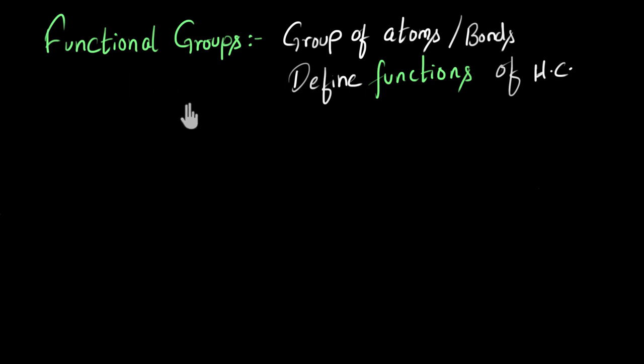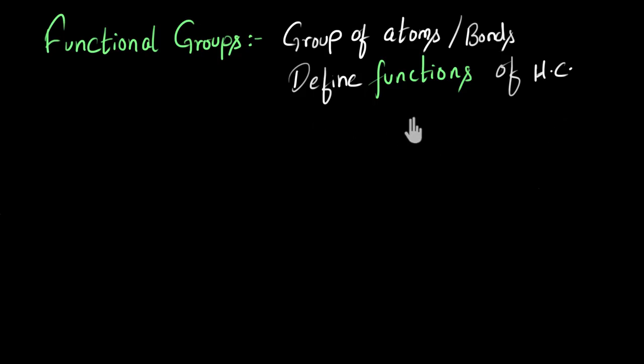Functional groups are basically groups of atoms and bonds which define the functions of hydrocarbons. They define the function, and that's why they are called functional groups.